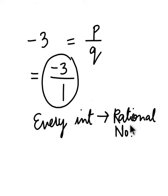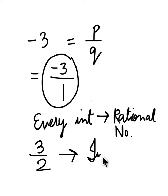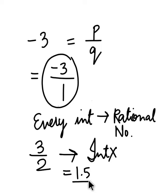But every rational number cannot be an integer. So every integer is a rational number, but every rational number cannot be an integer. For example, if I write a rational number like 3 by 2, then 3 by 2 is not an integer. Because 3 by 2, if you calculate, it will be equal to 1.5, and 1.5 is not an integer.